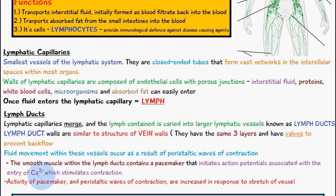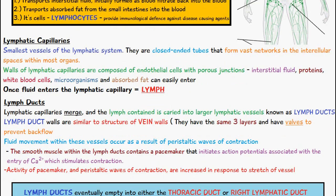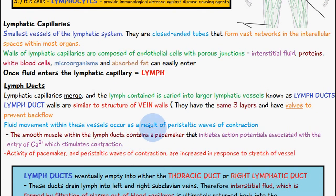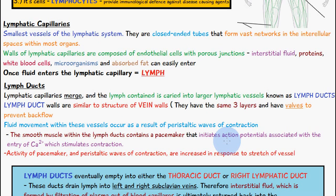Fluid movement within these vessels occurs as a result of peristaltic waves of contraction, which help to squeeze the lymph across. The smooth muscle within the lymph ducts contains a pacemaker that initiates the action potential associated with the entry of calcium ions, which stimulates the contraction. The pacemaker activity and peristaltic waves of contraction are increased in response to the stretch of a vessel. So when there's a greater stretch of the vessel, the pacemaker increases in activity and there are more peristaltic waves of contraction.